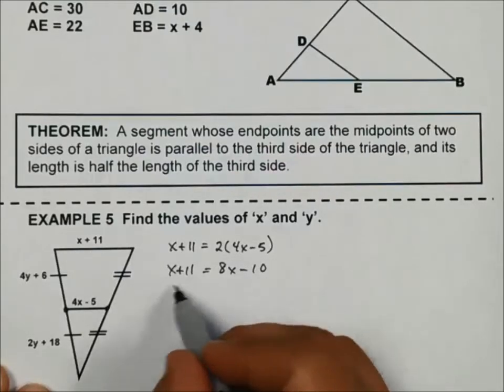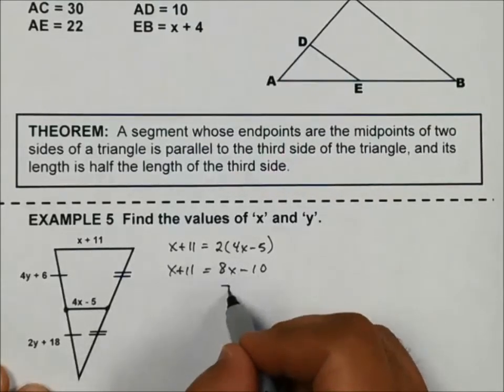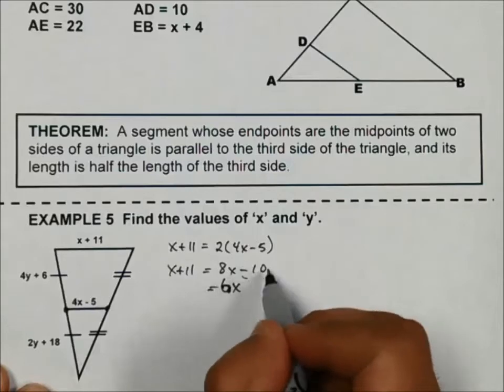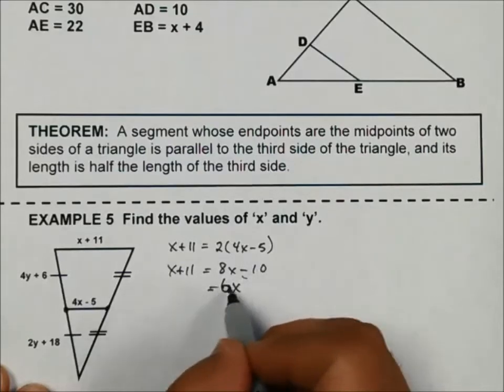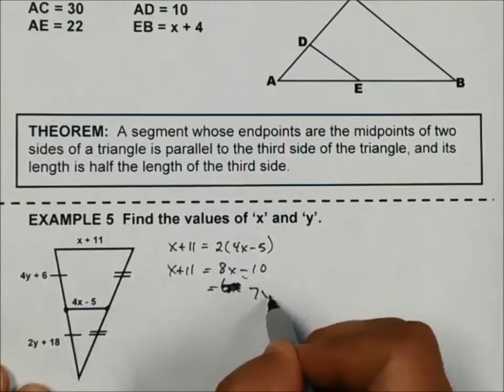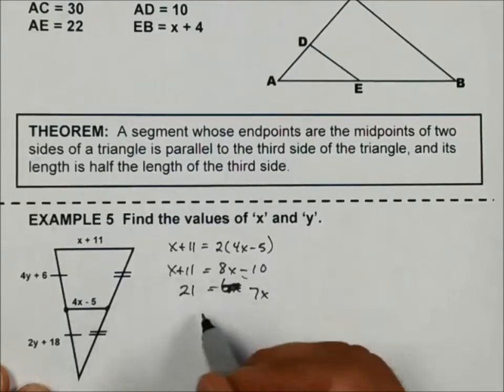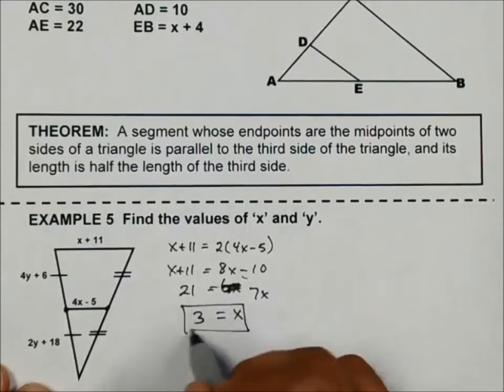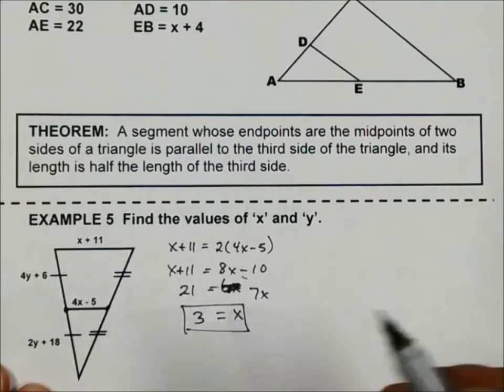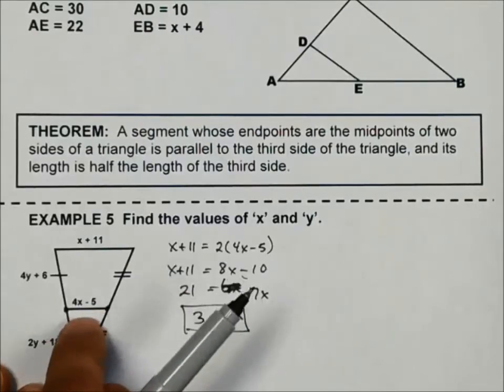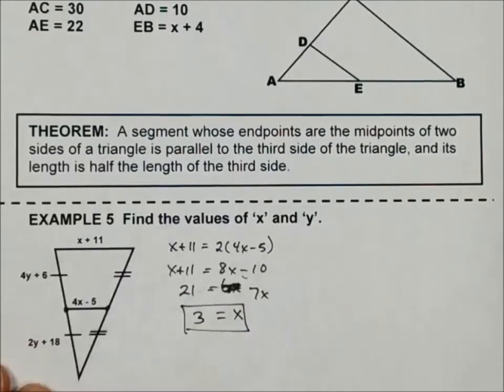If I subtract here, that's going to give me 7X. And then if I add 10 to both sides, it's going to give me 21. Divide by 7, X is 3. So again, this is like a median or mid-segment. It's equal to half of the X plus 1.